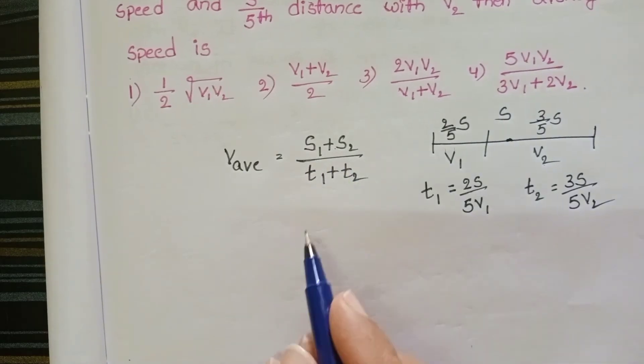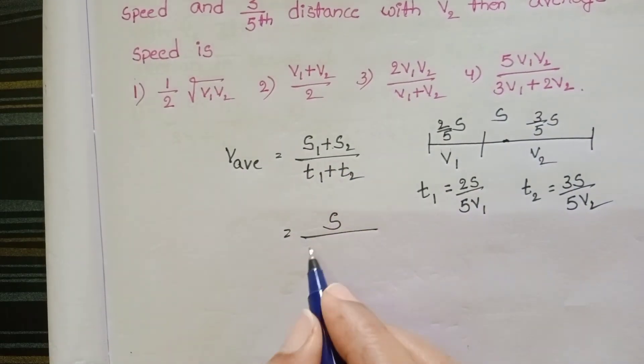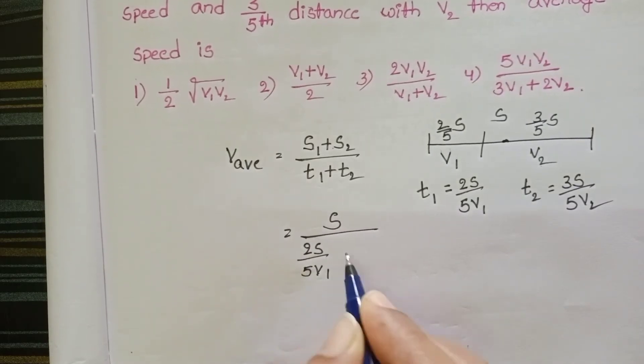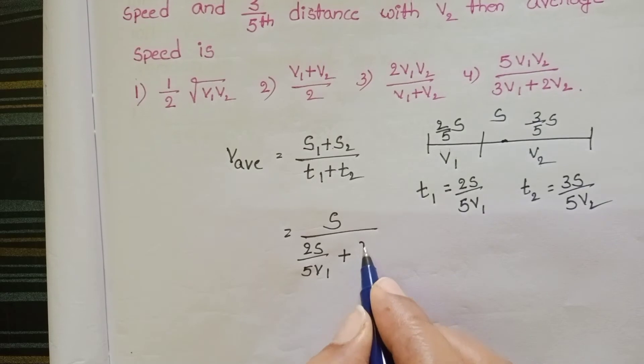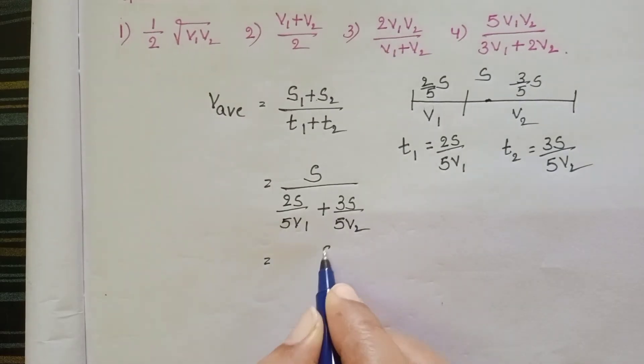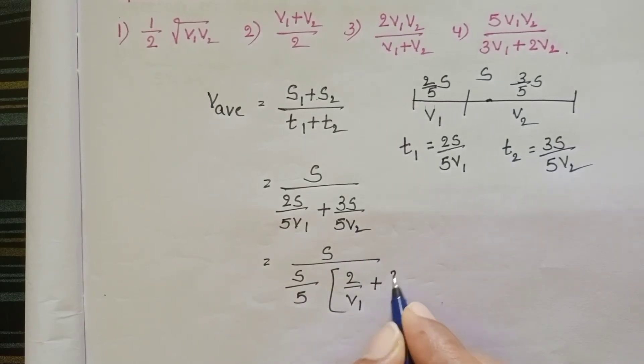Now, total distance S1 plus S2 equals S, and in place of T1, 2S by 5V1 plus 3S by 5V2. Take S by 5 into 2 by V1 plus 3 by V2.